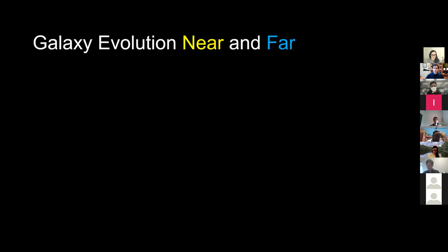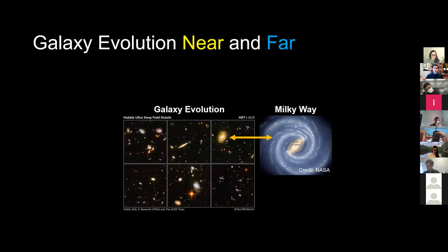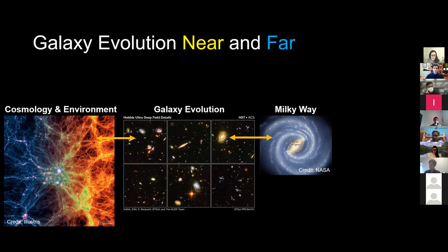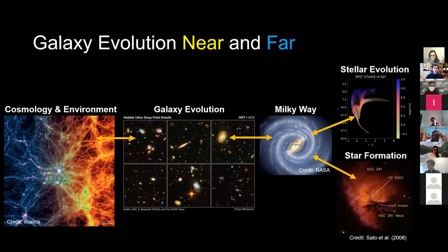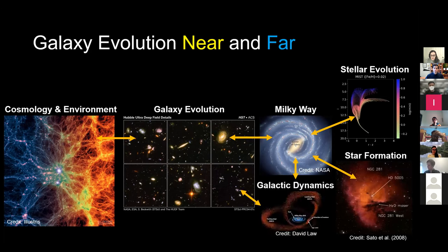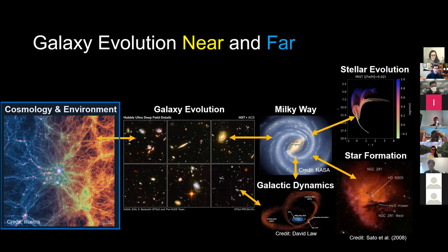The question becomes: you have high-quality spectroscopic data for a small biased fraction, and crude photometric data for a much larger set — they're looking at the same things but in two very different ways. Josh is interested in learning how the Milky Way connects with galaxy evolution broadly. To understand galaxies, you need to go bigger — large-scale structure and cosmology. To understand the Milky Way, you need to go smaller — stars and how they form.